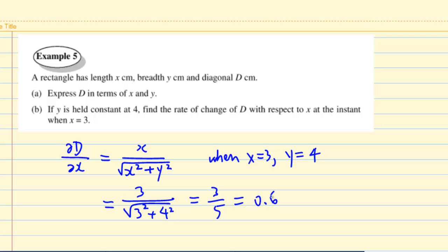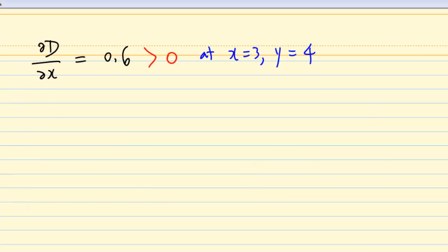This number is positive. Let's interpret this number. It means that the diagonal D increases with x at x equal to 3, y equal to 4.